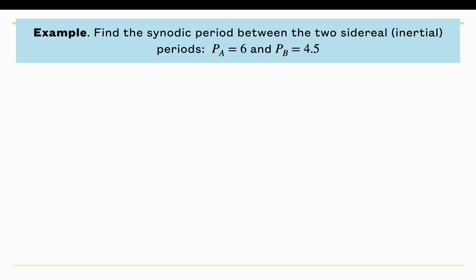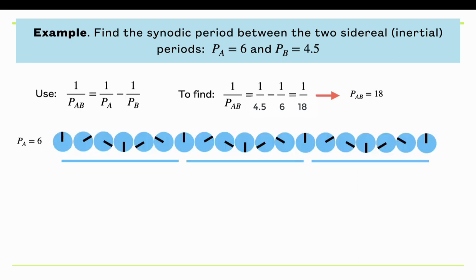Here's an example to illustrate this. Find the synodic period between the two sidereal periods of 6 and 4.5. Let's assume that one planet has a period of 6, another planet has a period of 4.5. We want to find the relative period between these two motions. So we just use that equation. We plug in 6 and 4.5 to get 18. If we want to visualize this, the first planet has a period of 6. Every 6 steps, the planet gets back to its initial position. We've got 3 periods of 6 here for the first planet.